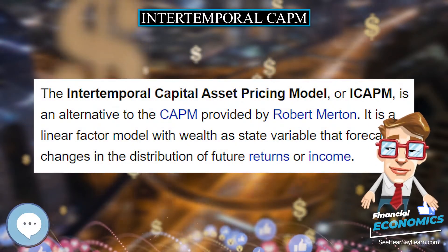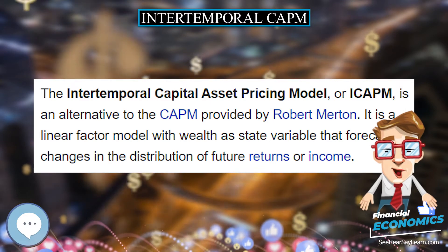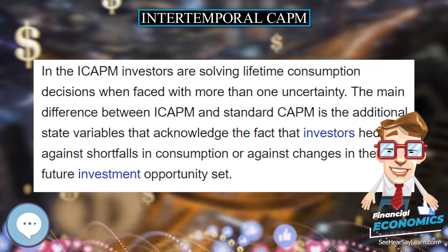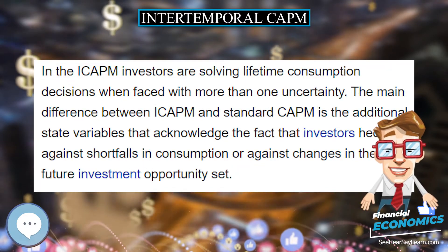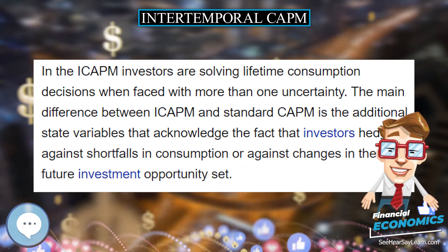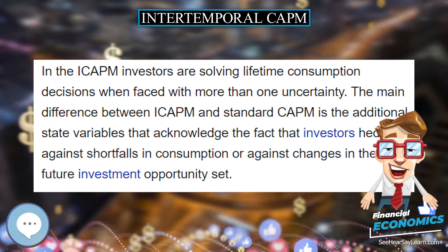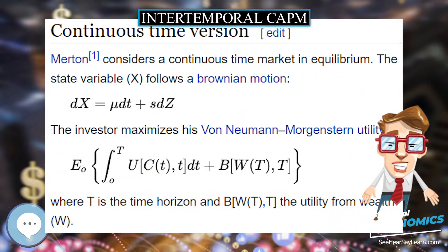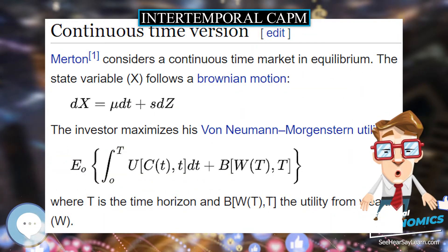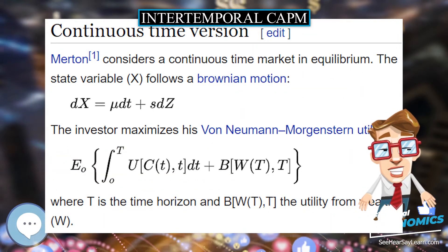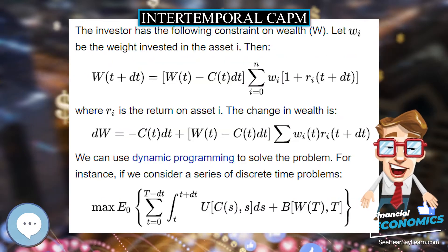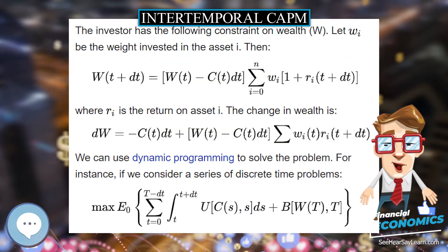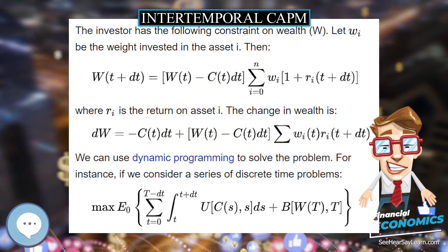The Intertemporal Capital Asset Pricing Model, or ICAPM, is an alternative to the CAPM provided by Robert Merton. It is a linear factor model with wealth as a state variable that forecasts changes in the distribution of future returns or income.